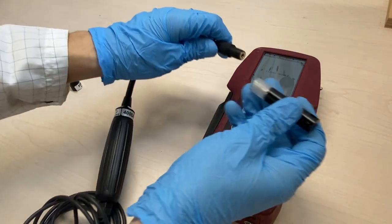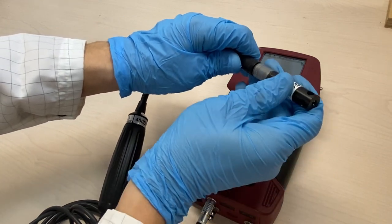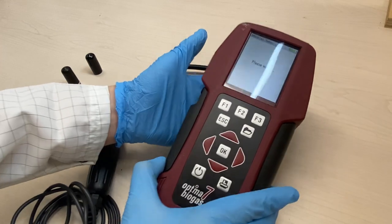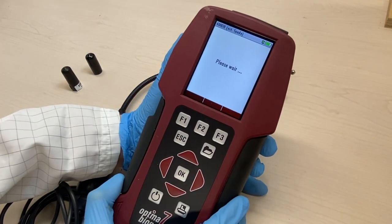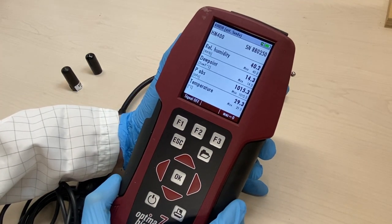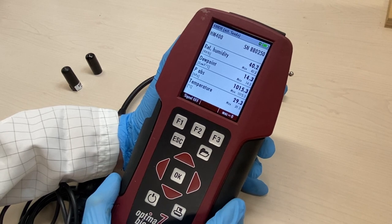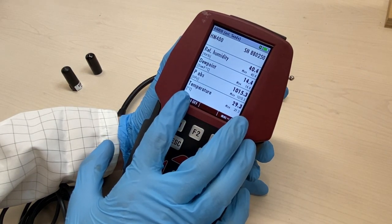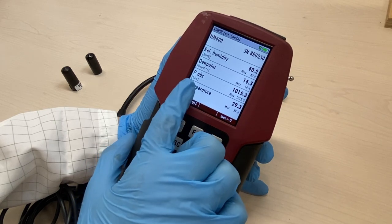Attach the jack end of the sensor onto the probe. It will take a few seconds for the instrument to detect the connection of the sensor. Dew point and temperature will default to Celsius. The absolute pressure reading will default to hectopascals.